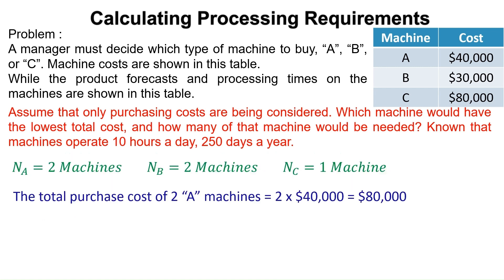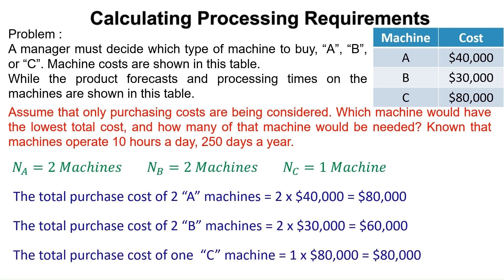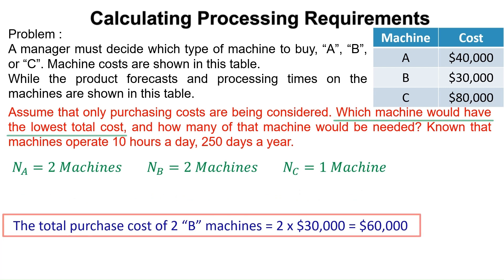We have three options: to buy two A machines at a total purchase cost of 2 times $40,000 equals $80,000; to buy two B machines at a total purchase cost of 2 times $30,000 equals $60,000; or to buy one C machine at a total purchase cost of $80,000. In conclusion, we should buy two of the B machines at a total cost of $60,000 because this fulfills the requirement of the lowest total cost.